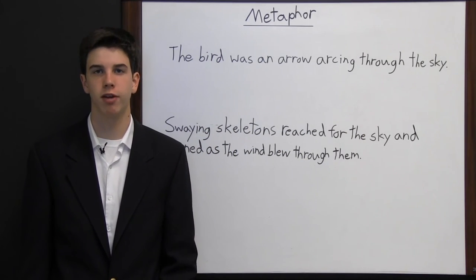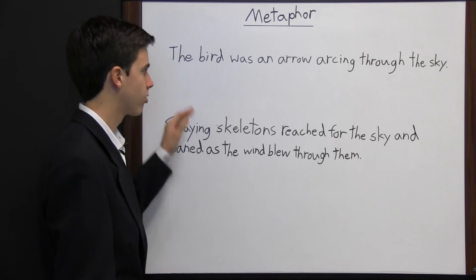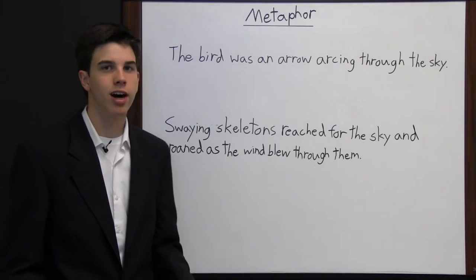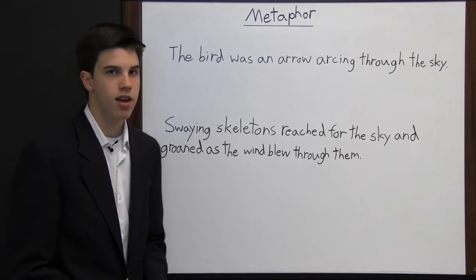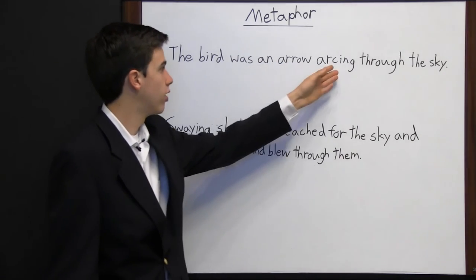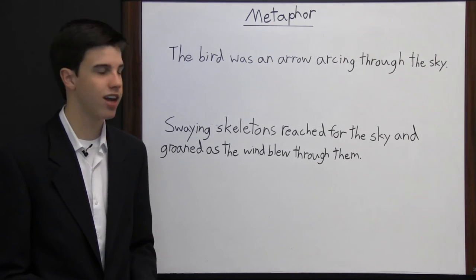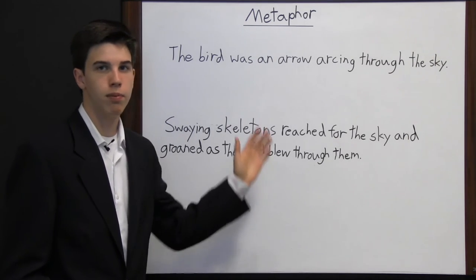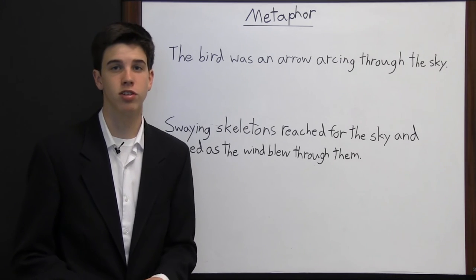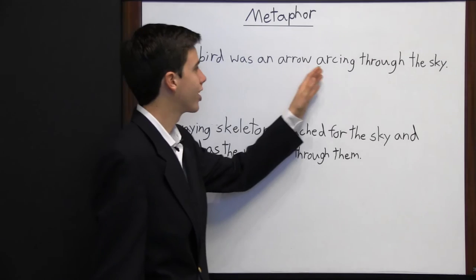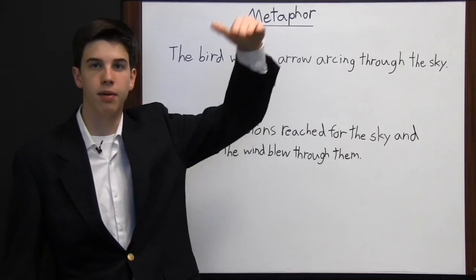A metaphor is a type of figurative language in which the author equates one thing with that of something else. This sentence says: "The bird was an arrow arcing through the sky." Here, the bird wasn't actually an arrow, but instead the author is saying the bird is like an arrow arcing through the sky. This is a way for the author to get you to think about the bird in a different way. The author could say the bird swiftly flew through the air making a big arc, but that's not very interesting and doesn't evoke emotion. So instead the author uses a metaphor, and the reader could conclude that the bird must have flown swiftly and then bent through the sky.